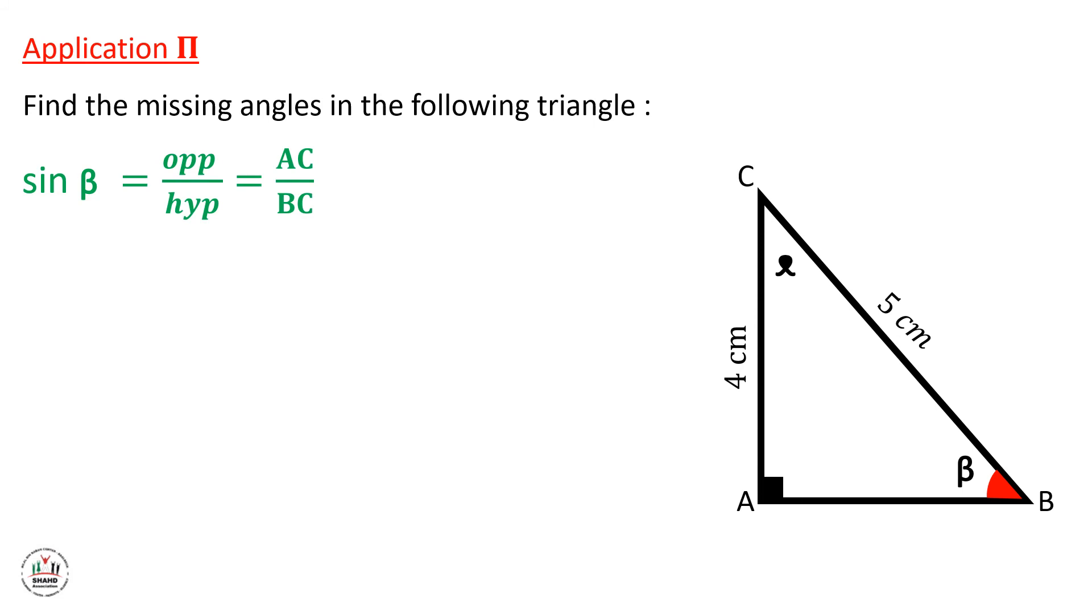Again, we only need to write the rules that we have learnt previously. So sine beta equals opposite over hypotenuse, which is equal to AC over BC. This time we don't have beta, so we keep it as it is and we substitute the length of the other sides. So the opposite side, which is AC, equals 4 cm, and the hypotenuse equals 5 cm. Now by using calculator, we can press shift sine to get this formula, and beta will be equal to inverse sine 4 over 5, and that's equal to 53.13 degrees.